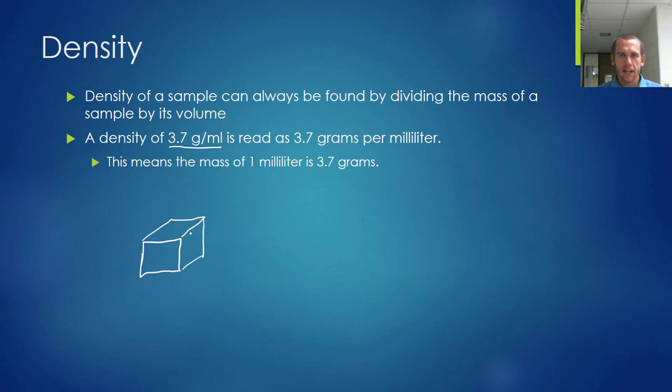So if I had this block, and it's two centimeters by two centimeters by two centimeters, well that's clearly two times two times two for volume, eight cubic centimeters. And since that's more than one cubic centimeter, it's got a mass more than 3.7. In fact, since it's eight times the volume, it will also have eight times the mass.